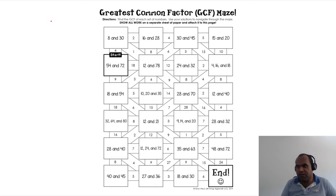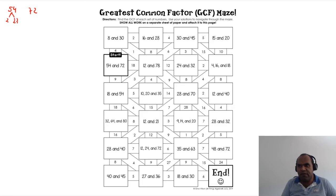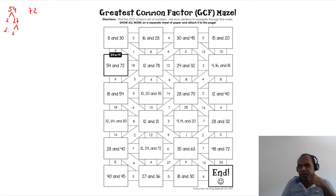Let's work on 54 and 72. I need a lot of space here. Breaking down 54: two times what number equals 54? That number is 27. Now breaking down 27: three times what number equals 27? I check: two plus seven equals nine — yes. So nine, and then three times three. Great, I have 54 broken down.